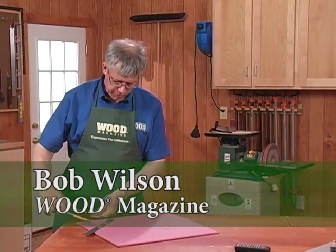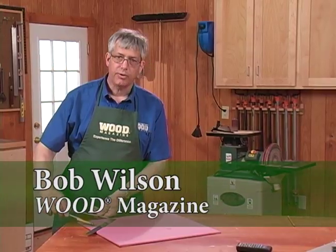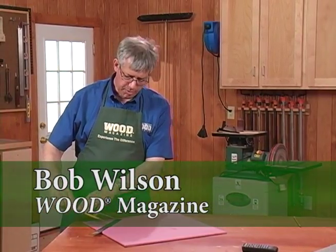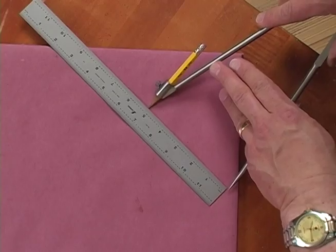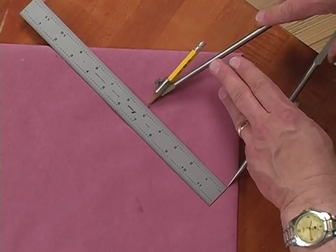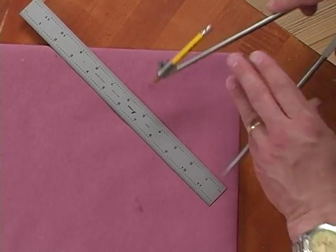To draw a wide radius on a corner, start by deciding what the radius is going to be, and then set your compass to that distance. In this case, we're going to make it 5 inches.